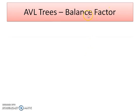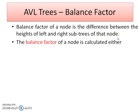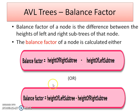Now let's go to the balance factor. The balance factor of a node is the difference between the heights of the left and right subtrees of that node. The formula is: balance factor = height of right subtree minus height of left subtree, or alternatively height of left subtree minus height of right subtree. Either way gives you the balance factor.